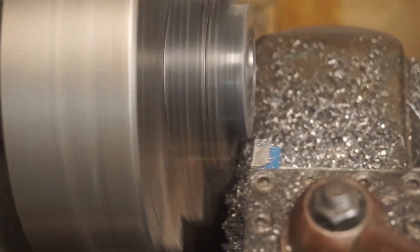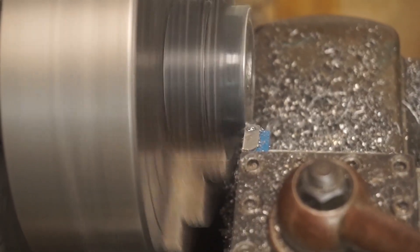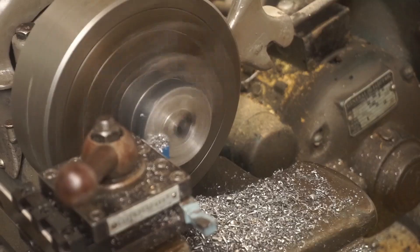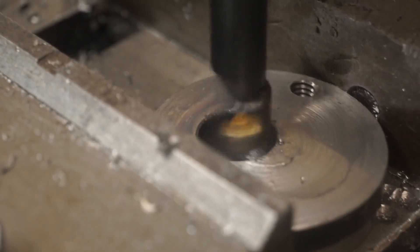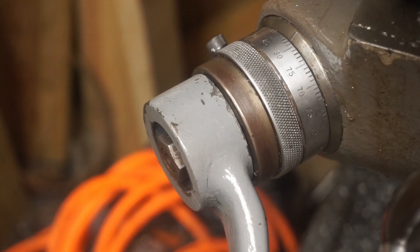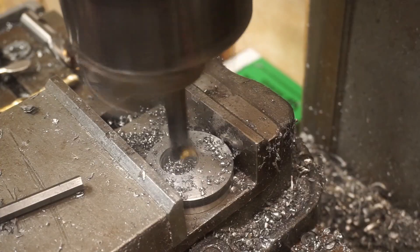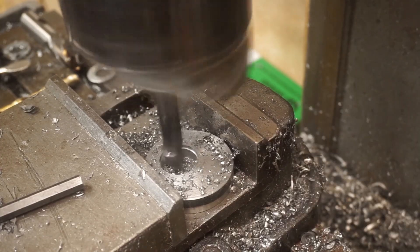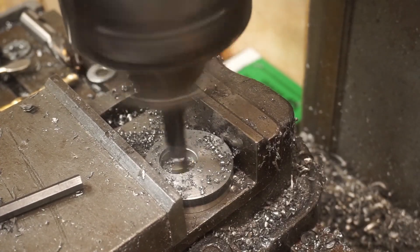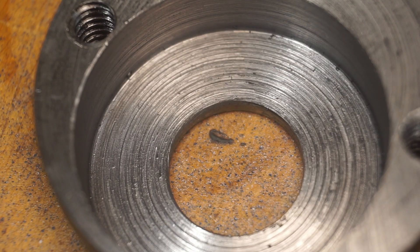On the lathe, I'll square the end and then turn a shoulder on the side of the piece. Finally, I'll enlarge the offset hole to make a pocket for a radial bearing. And here's the final set of eccentric pieces.